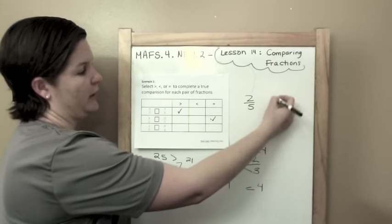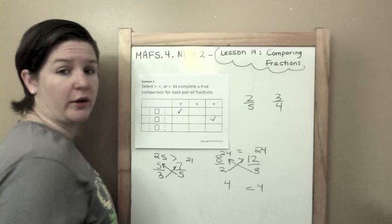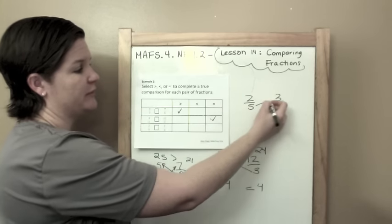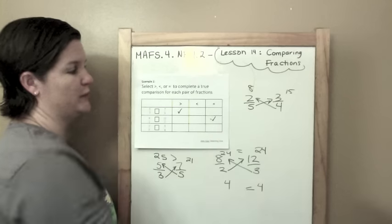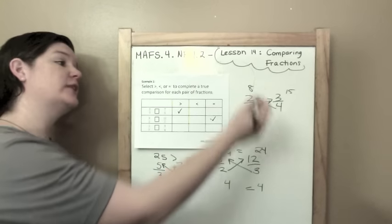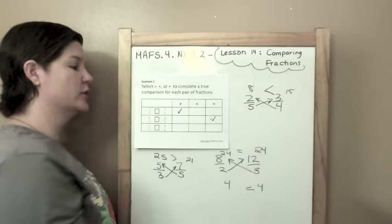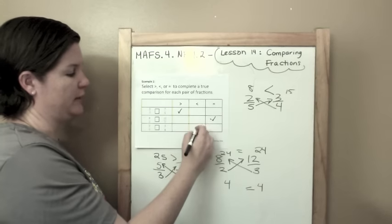Last one, 2 fifths and 3 fourths. 5 times 3 is 15. 4 times 2 is 8. What's greater, 8 or 15? 15. So I want that less than.